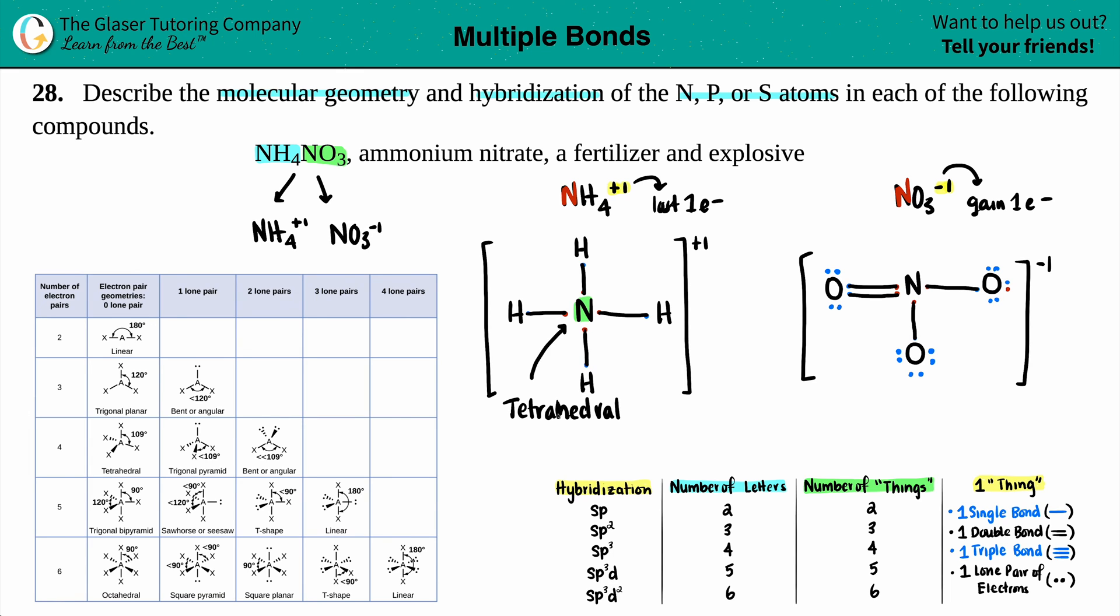Let's do the same thing for this nitrogen. I have A in the middle, and now how many elements is it bound to? I got an oxygen, another oxygen, and another oxygen. In this case, this would be AX3. I have the central atom AX3—three oxygens and no lone pairs. I'm just looking for something that has an atom surrounded by three other elements, no lone pairs, and that is this one. So this guy's geometry is trigonal planar.